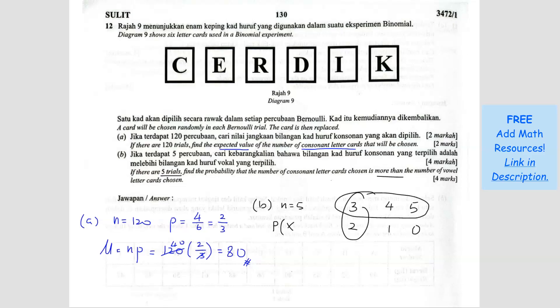That means we are looking for X like 3, 4, and 5. So that means we are looking for the probability of X more than or equal to 3. So the probability can be X equals 3, the probability can be X equals 4, and the probability can be X equals 5.